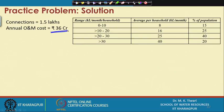The basic information at hand: 36 crore is to be recovered per year, which means 3 crore per month on average. There are 1.5 lakh total connections and the consumption pattern is given.